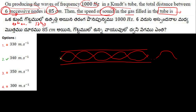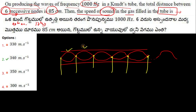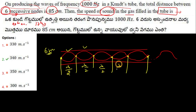This is a Kundt's tube and there are six successive nodes: one, second, third, four, five, and six. Don't consider the waves here — you have to consider nodes because it is said that six successive nodes. We know that the wavelength between one node is lambda upon 2.